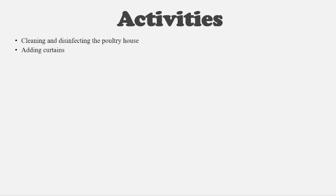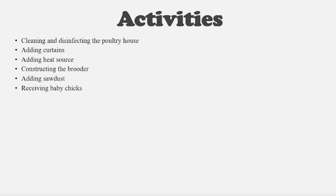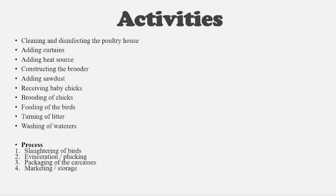The next subheading under methodology is your activities. List and describe all activities — you must indicate how you as the investigator have completed them, not just defining what they are but how you have done them. In addition to the explanation, you should have photographs showing that you were involved in the whole process — for example, cleaning and disinfecting the poultry house, adding curtains, adding bulbs, constructing the brooder, adding sawdust, receiving and placing baby chicks, feeding the birds, turning the litter, and washing the waterers.